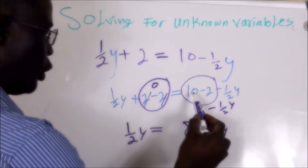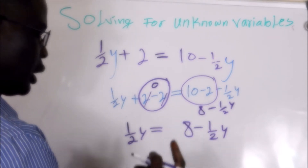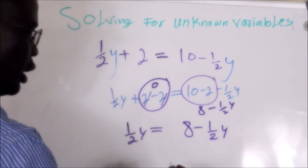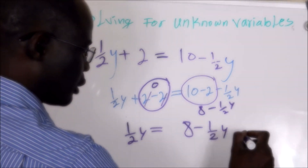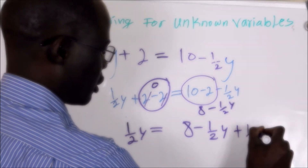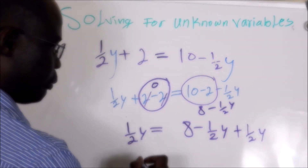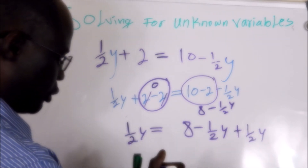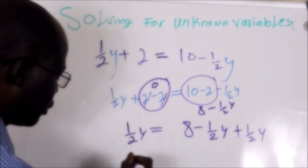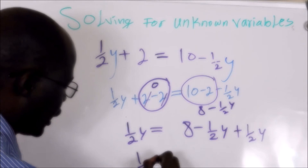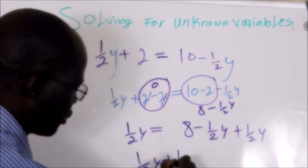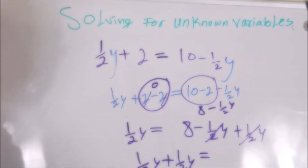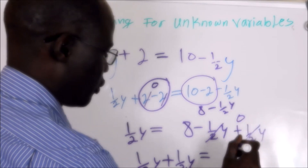So it should be: 1 over 2Y equals 8 minus 1 over 2Y. Because what we've done here, we subtracted 2 from 10, leaving us with 8. The next step, we're going to add 1 over 2Y to both sides of the equation. Because it's minus on the right side, we add to both sides. So we get 1 over 2Y plus 1 over 2Y, and the right-side Y term cancels to 0.